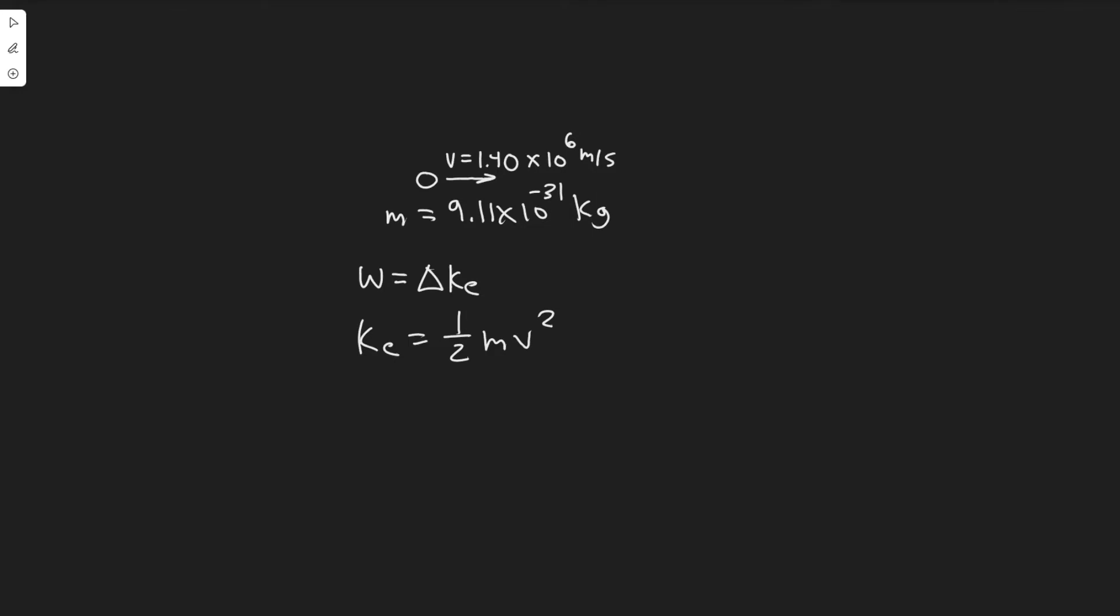So notice that if I write this: one-half mv final squared minus one-half mv initial squared, this right here is going to be equal to the change in kinetic energy. Because you should notice that the mass is just a constant, and so the only thing changing is the velocity. So if we take the final velocity and minus the initial velocity in this formula, that will give us the change in kinetic energy.